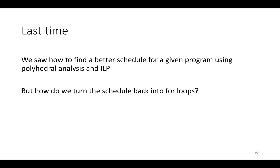Last time we saw how you could formulate finding a better schedule for a given program using polyhedral analysis and integer linear programming. But once we've found that better schedule, all we have is a bunch of functions that map instances of statements in the original program to times in the new schedule. So how do we turn this new schedule back into for loops?